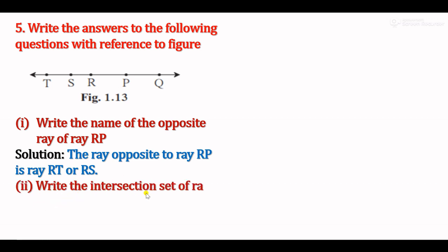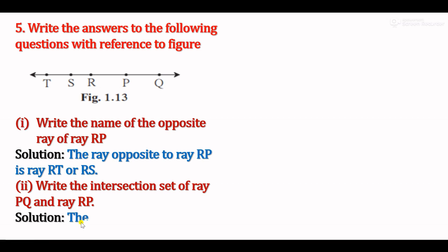Sub-question 2: Write the intersection set of ray PQ and ray RP. Ray PQ and ray RP — the intersection means the common part between the two. Ray PQ is common to both. The intersection set of ray PQ and ray RP is ray PQ.